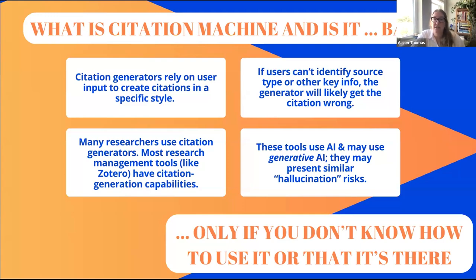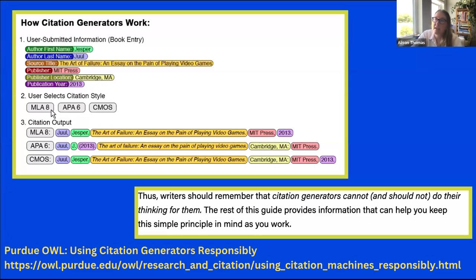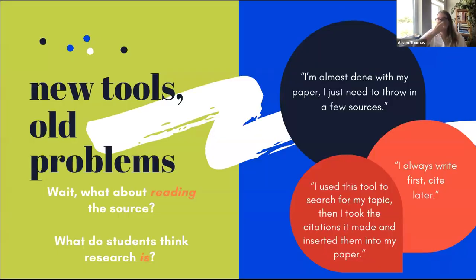The Purdue OWL has a page on using citation generators responsibly. They describe how citation generators work and have language zeroing in on important points: writers should remember that citation generators cannot and should not do their thinking for them. This is at the heart of the advice we're giving students about using generative AI tools responsibly — these tools shouldn't be doing the thinking for you.